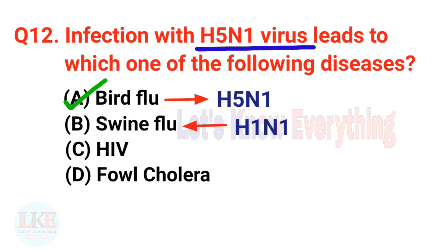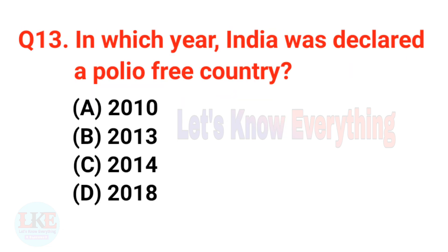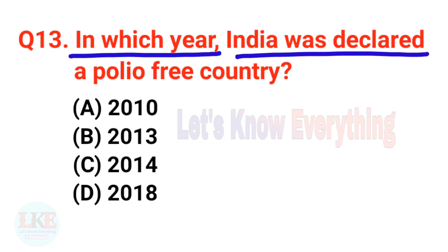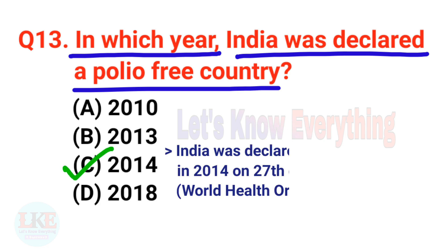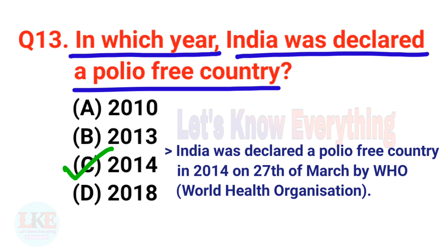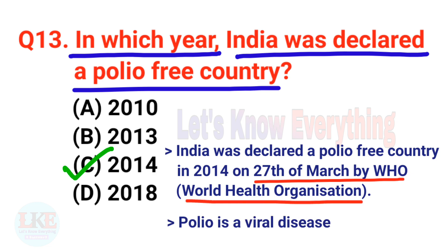Question number thirteen: in which year was India declared a polio-free country? The right answer is option C, 2014. India was declared polio-free on 27th March 2014 by the WHO (World Health Organization). Remember that polio is a viral disease.